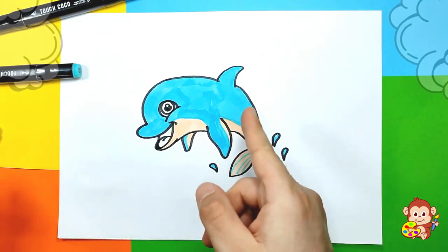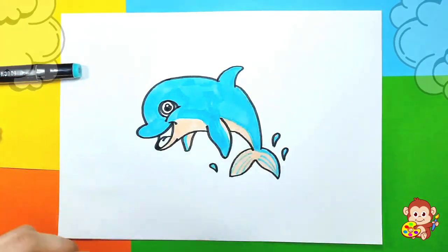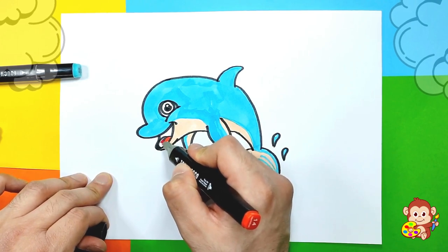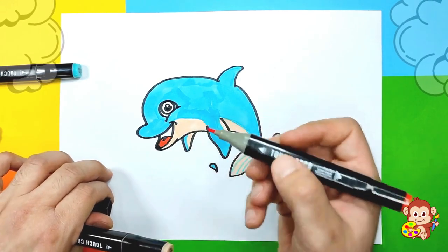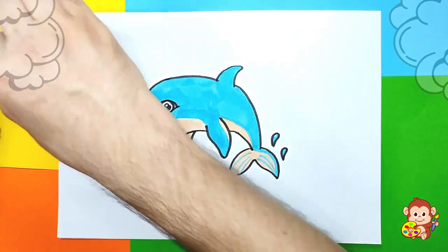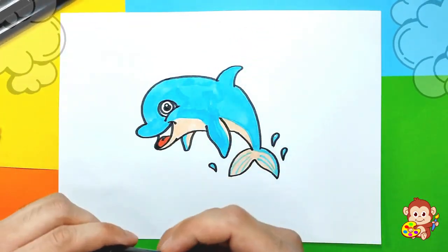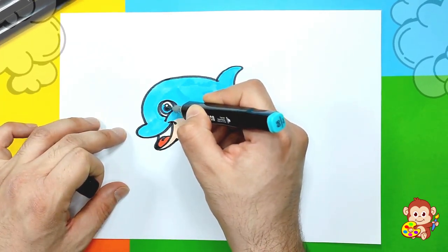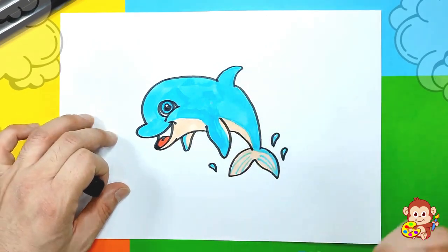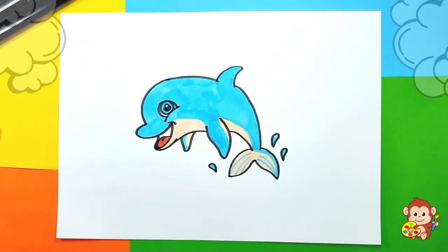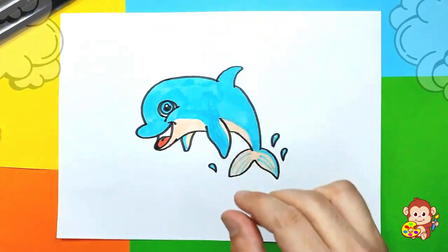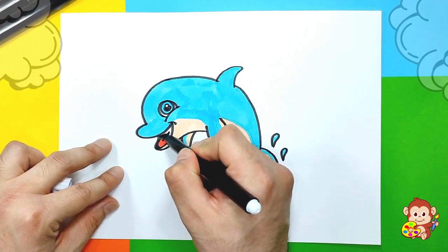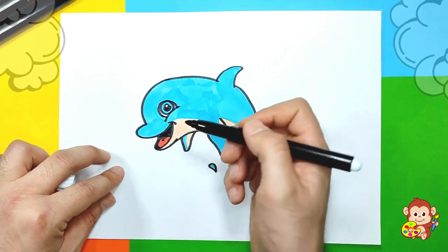Now we can color, using red or you can use orange, to color his tongue, just like this. Also more of this cute blue color to color his eye, just like that. I'm gonna also use black to color inside of his mouth, just like that.